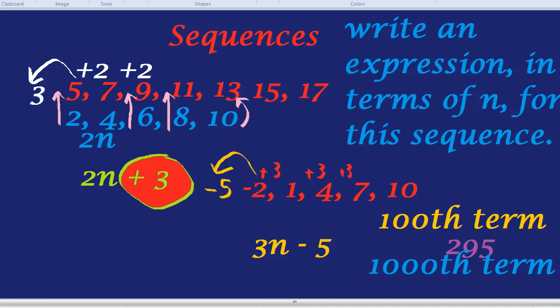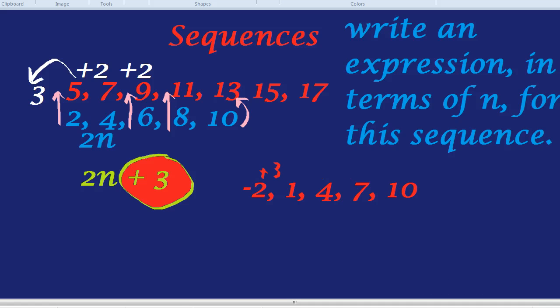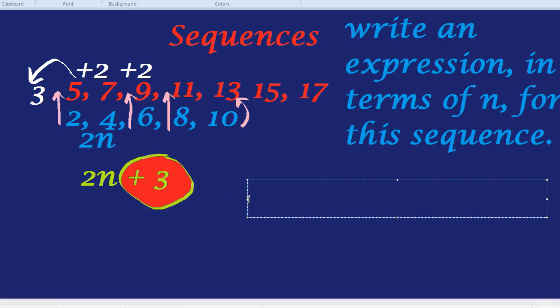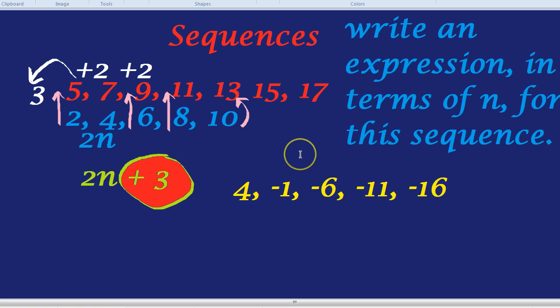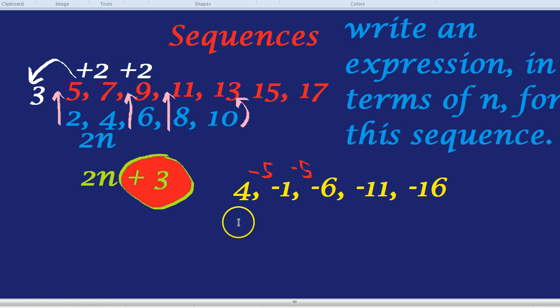How about one last sequence, and I'm going to ask a slightly weirder question right at the end. The sequence this time would be, 4, minus 1, minus 6, minus 11, minus 16. What's it going up in? Well, actually, it's going down. It's going down by 5. And if it's minus 5 each time, you're right, it would be minus 5n. You always do what it's going up or down in, and then an n. So, it's minus 5n.